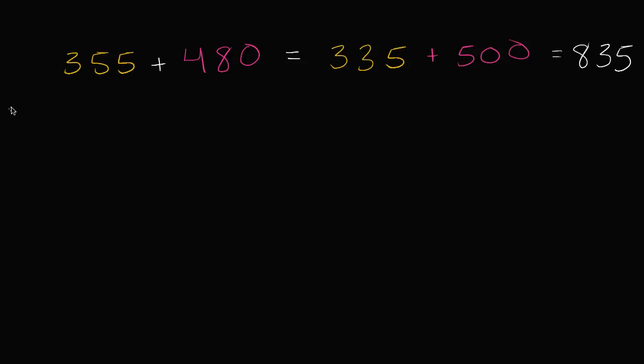So, we could break up 355. We could say that it's going to be equal to, let's break it up into 335 and 20. And remember, the whole reason why I picked 20 is because I'm going to want to add that to 480. But I'm just doing it step by step here. So, plus 480. And now, I can just change the order with which I add. So, I could say this is going to be equal to 335 plus 20 plus 480. Instead of adding the 335 and 20 first, I could add the 20 and 480 first.